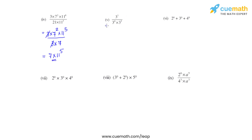In the fifth bit, we have 3 raised to 7 divided by 3 raised to 4 times 3 raised to 3. Using the product law, we keep the same base and add the powers in the denominator: 4 plus 3 gives 7, so we get 3 raised to 7 divided by 3 raised to 7. These cancel, giving 3 raised to 0, and since anything raised to 0 is 1, the final answer is 1.